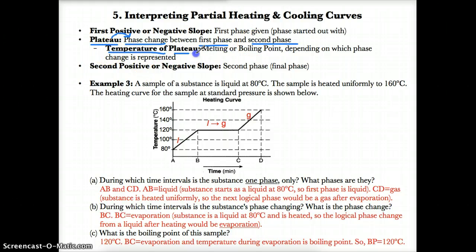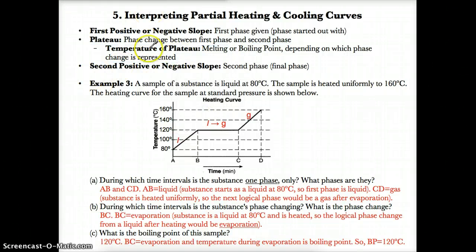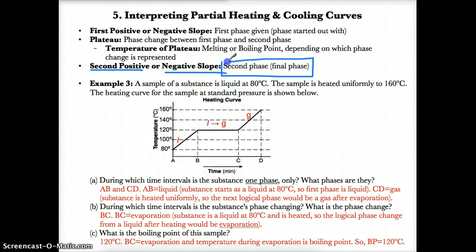The temperature of this plateau would be the melting or boiling point, depending on which phase change is represented. If evaporation is represented, it's the boiling point; if the plateau represents melting, then that's the melting point. The plateau represents the phase change between the first and second phase, just like in a traditional heating or cooling curve. The second positive or negative slope represents the second or final phase mentioned in the problem.